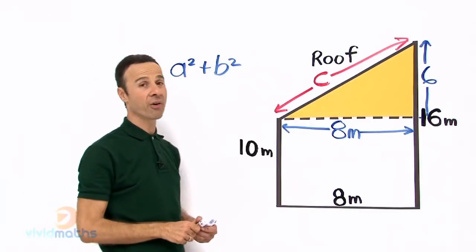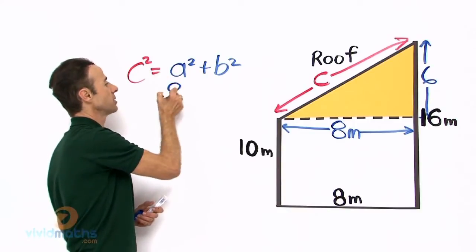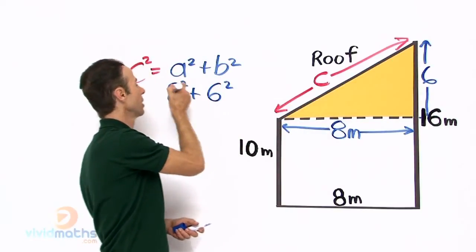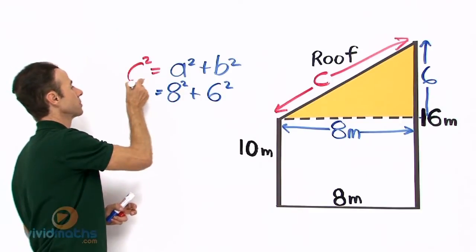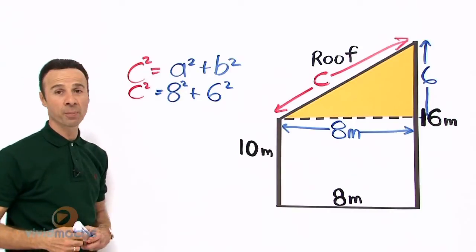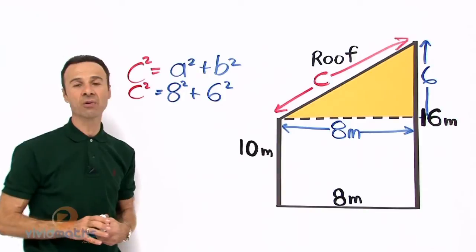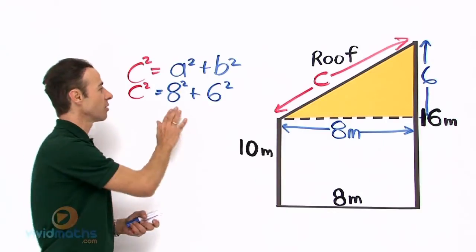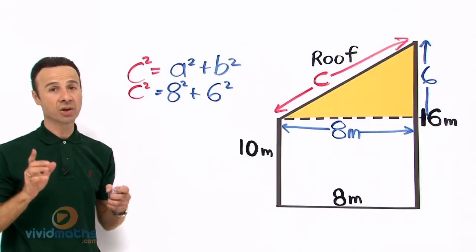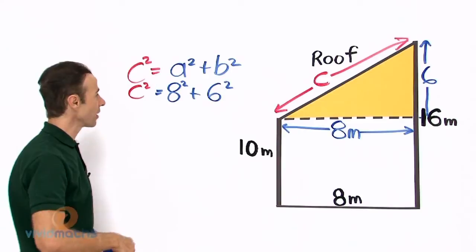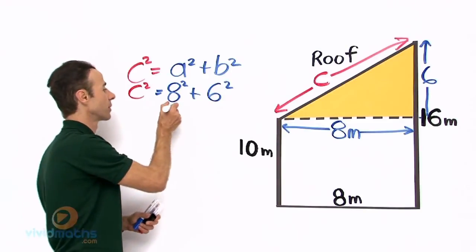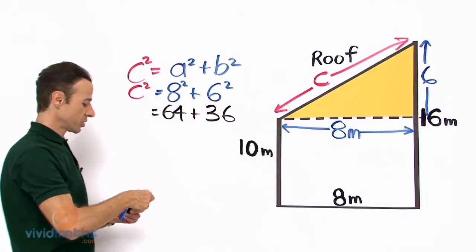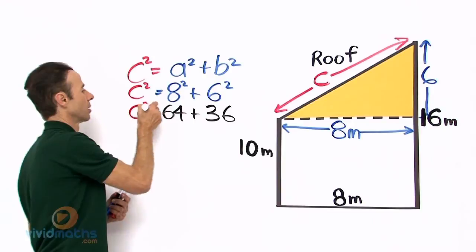Let us substitute the values. We will call A equal to 8m, so that is 8 squared, plus the height — just the yellow part — that is just 6, so that is 6 squared, and that equals C squared. We are looking for the hypotenuse, so we add these two together. All triangles have 3 sides — we are given 2, we need to find the third. So 8 squared is 64, plus 6 squared is 36, and that equals C squared.